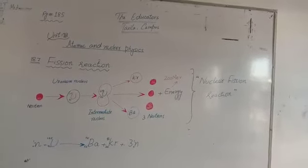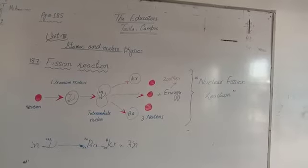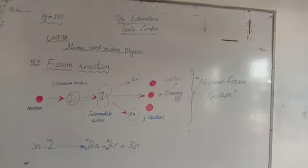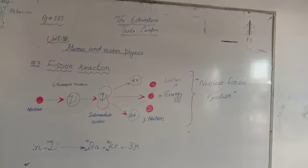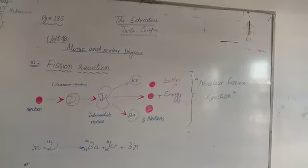Nuclear fission takes place when a heavy nucleus absorbs a slow-moving neutron and then splits into two smaller nuclei.